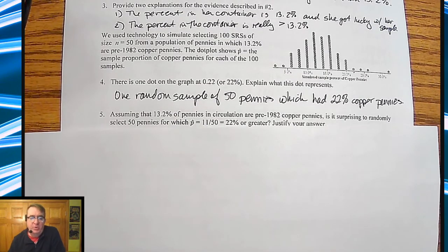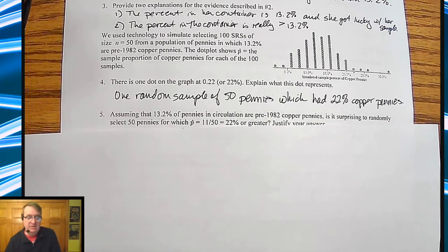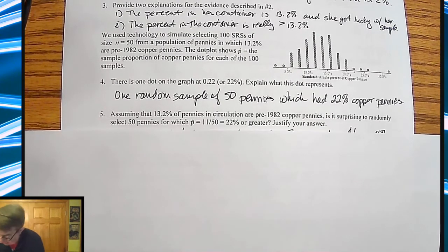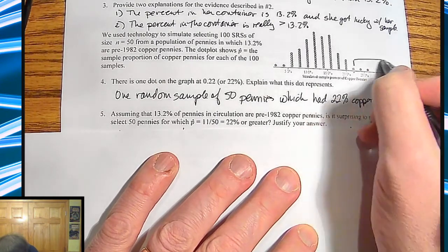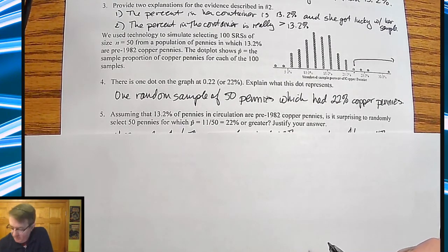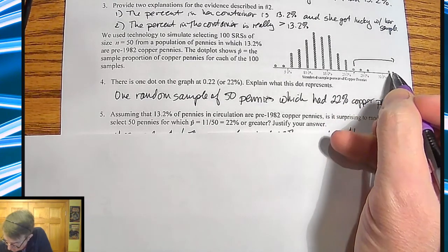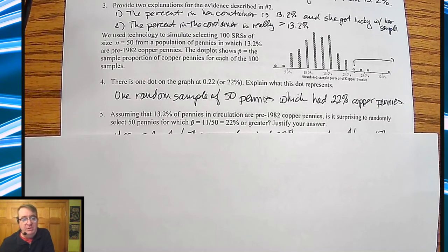Assuming that 13.2% of the pennies in circulation are pre-1982 copper pennies, is it surprising that randomly selecting 50 pennies for which the proportion is 20% or greater? This is what we're looking for here. We ended up getting, there's four of them there. One, two, three, four. So that's four out of 100. So 4% of what we saw was 22% or higher.